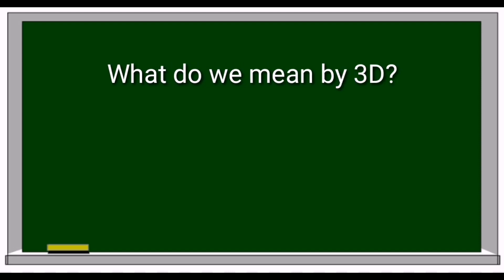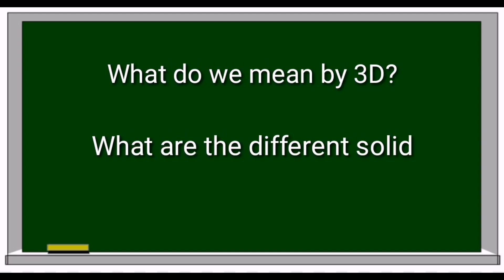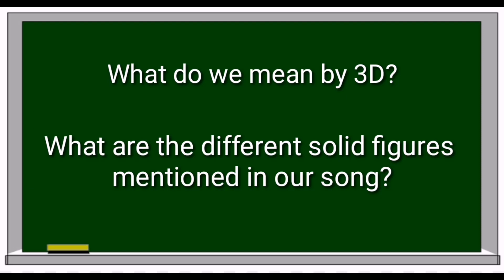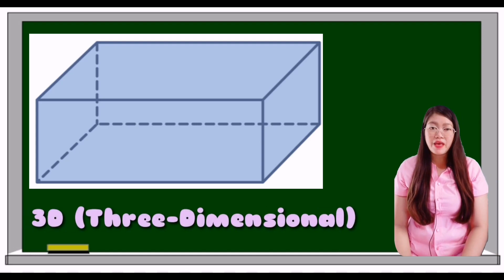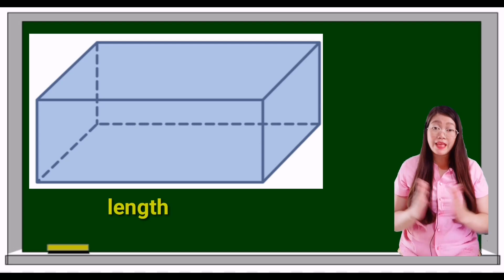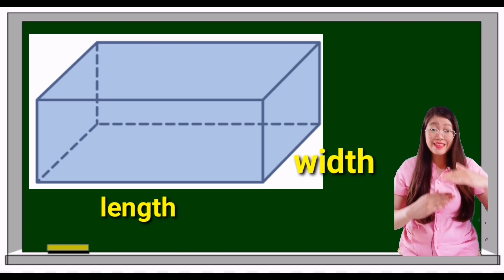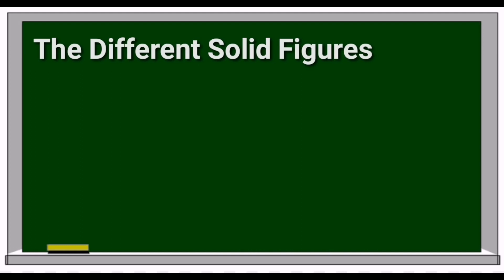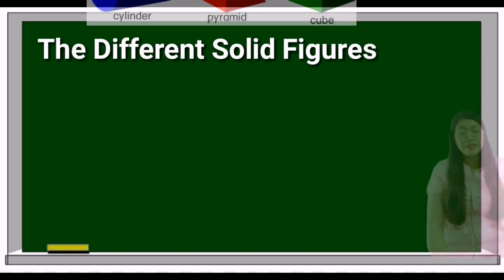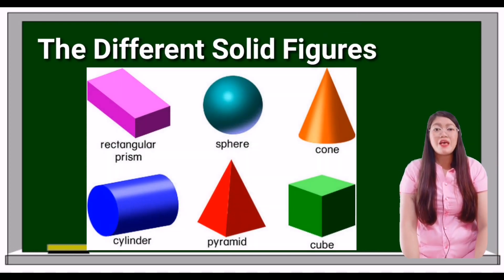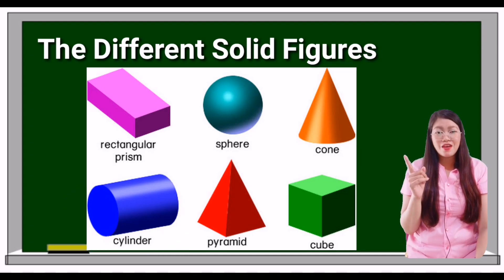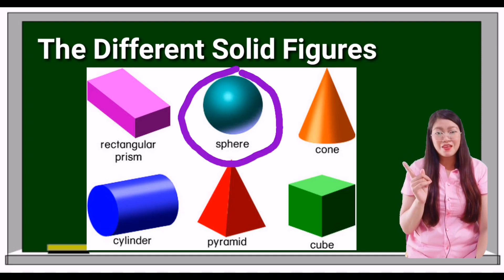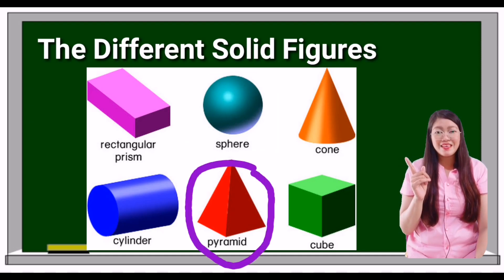Questions: What do we mean by 3D? What are the different solid figures mentioned in our song? 3D means three-dimensional. A three-dimensional figure is one having or appearing to have length, width, and height. The different solid figures mentioned in our song are cone, cylinder, rectangular prism, sphere, pyramid, and cube.